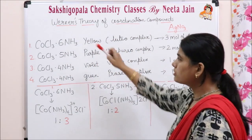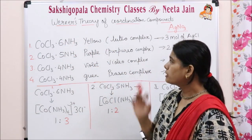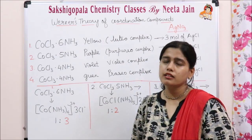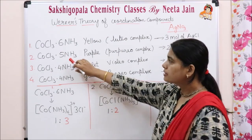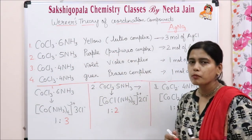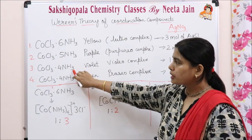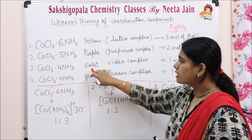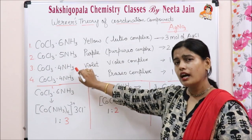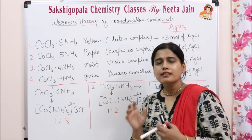Now, students, the various series of compounds formed by the reaction of cobalt(III) chloride and ammonia are as follows. The first compound is cobalt(III) chloride with 6 molecules of ammonia — this complex is yellow in color, called the luteo complex. The second compound is coordinated with 5 molecules of ammonia — this is purple, also called the purpureo complex. Another series has 4 molecules of NH₃ — this is violet, called the violeo complex. The last one is an isomer of the third, with the same formula but green in color.